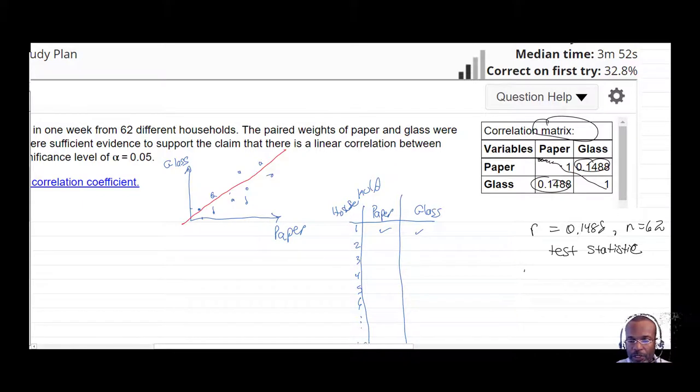And so what we want to do is investigate whether or not, given that we have the 62 different households, if there's correlation. Like if we can hypothesize whether or not there's enough evidence to support this claim of correlation. And we're going to do this at the alpha equals 0.05 significance level.